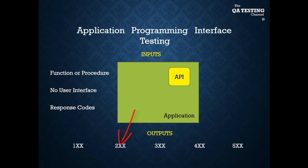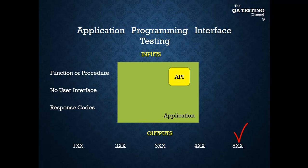If the code starts with one, it means it is an informational response. If it starts with two, it is a success response. If it starts with three, it means a redirectional response. If it starts with four, it is a client error. If it starts with five, it is a server error.